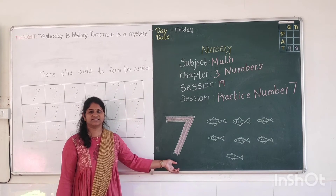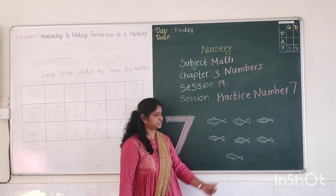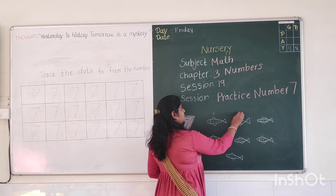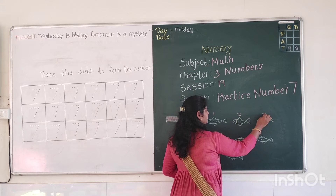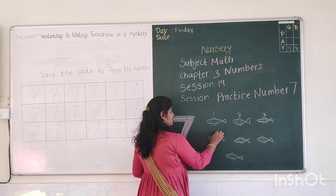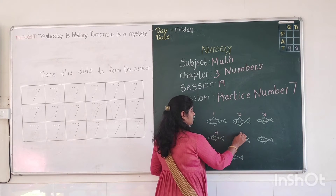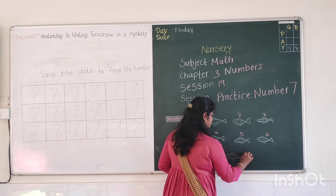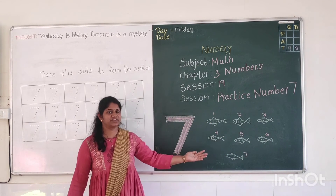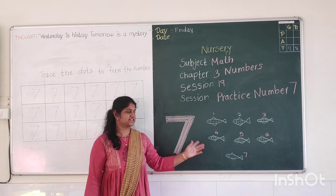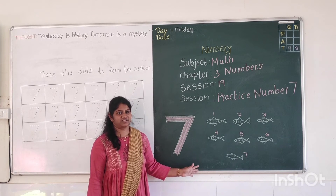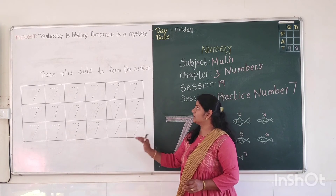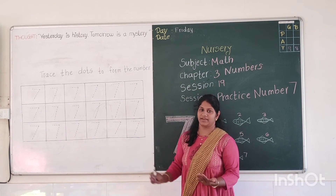This is number 7. And how many fish are here? 1, 2, 3, 4, 5, 6, 7. How many fish are here? Yes, 7 fish are here. Now I am going to show you how to trace the dots to form the number.